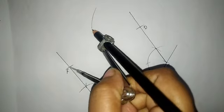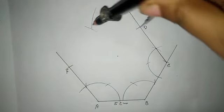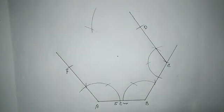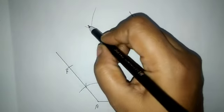With F as center and 5 centimeters radius, I draw another arc. The point where they meet we name E.